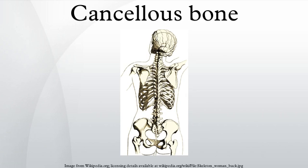Cancellous bone, synonymous with trabecular bone or spongy bone, is one of two types of osseous tissue that form bones. The other osseous tissue type is cortical bone, also called compact bone.